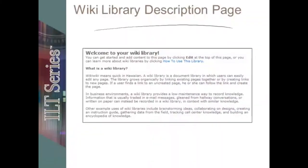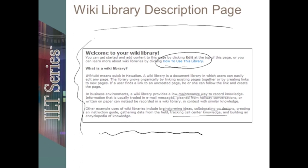The wiki library description page covers all about what a wiki is, its meaning, how it's used within a business environment, and other ways it can be used — such as brainstorming ideas, collaborating, and tracking call center information. It also provides a detailed link with directions on how to edit, create new pages, and add content. It does a very good job sharing how to utilize wiki pages if they're new to you. By default, every wiki library includes this as the default page, so whoever builds a wiki library will have a good set of directions built in.